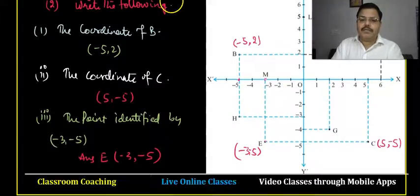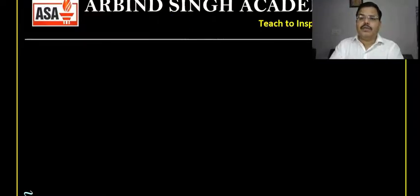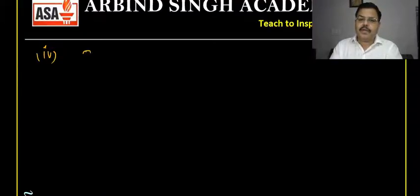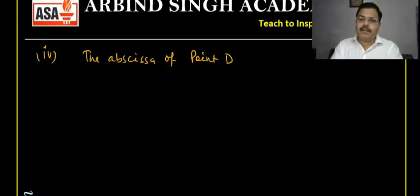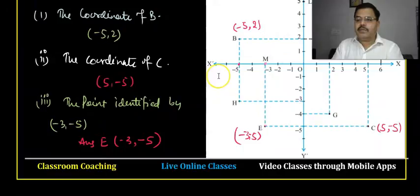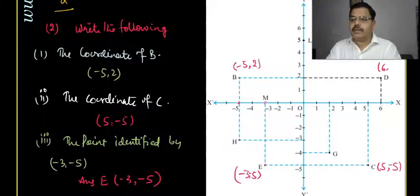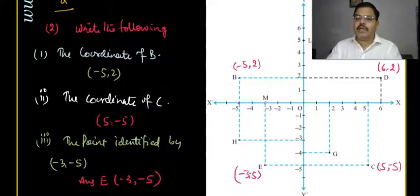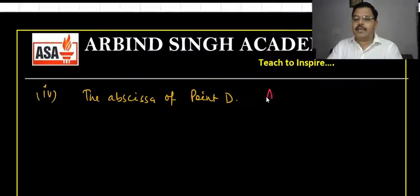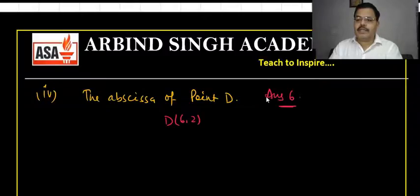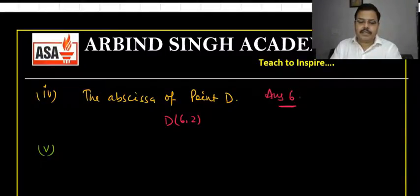The fourth part asks: what is the abscissa of point D? Point D has coordinates (6, 2). The abscissa is the x-coordinate, so the answer is 6.